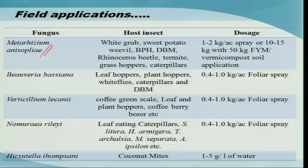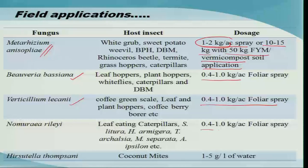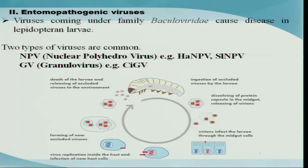Metarhizium anisopliae can be used either as a spray or as a soil application. As a spray, it is used at the rate of 1 to 2 kg per acre; for soil application, 10 to 15 kg can be mixed with 50 kg of FOM or vermicompost. Beauveria bassiana is used at 0.4 to 1 kg per acre as a foliar spray. Verticillium lecanii and Nomuraea rileyi follow the same rate, while Hirsutella thompsonii against coconut mite is used at 1 to 5 grams per liter of water per palm.